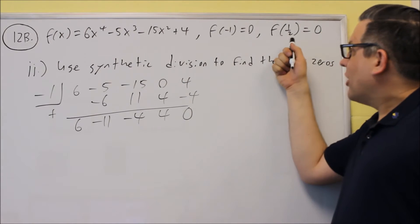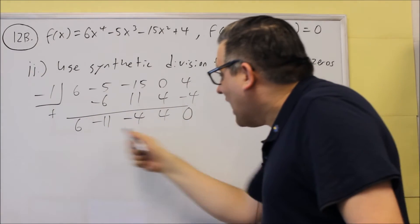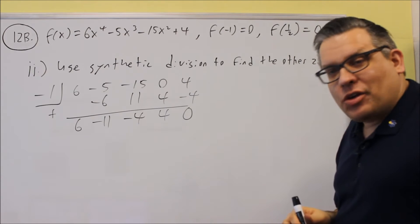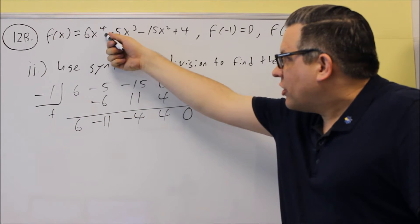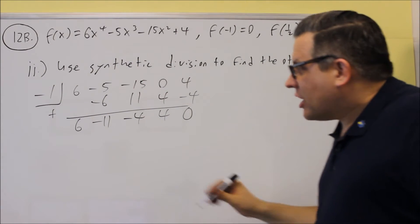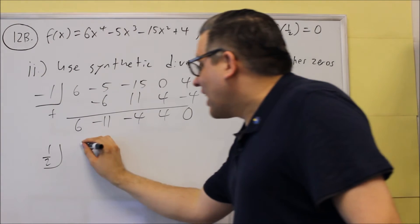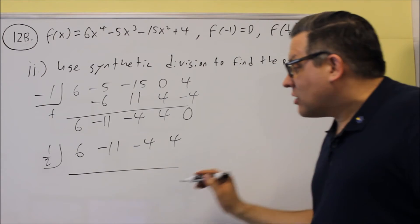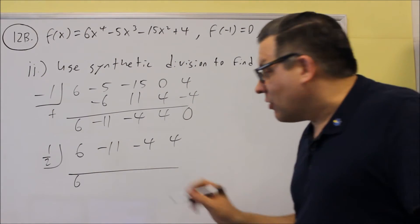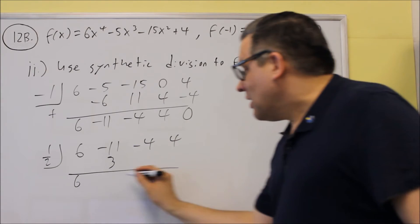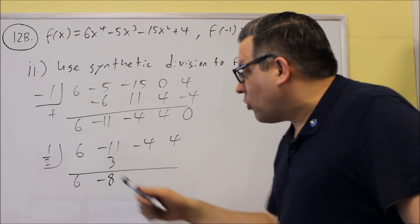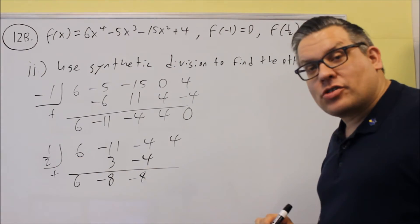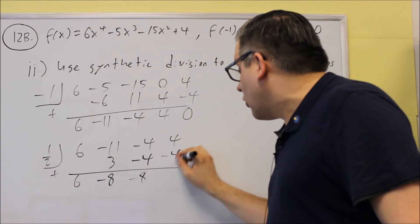Now take the other zero not yet used and apply it to the results from the first synthetic division. We can't just go back to the original, because that would still leave a cubic. So I take one half and use the numbers from the previous step. Six comes down, multiply by one half to get 3, add to get negative 8, multiply by one half to get negative 4, add to get negative 8, multiply by one half to get negative 4, and we get a zero.